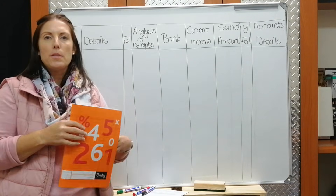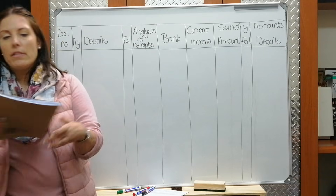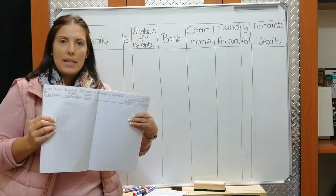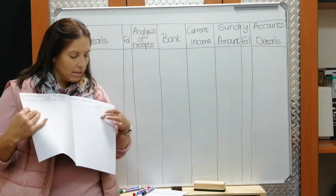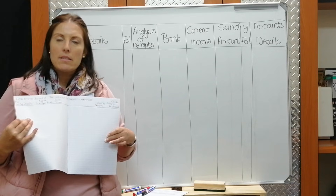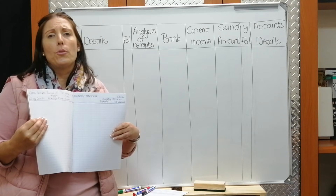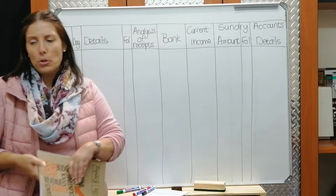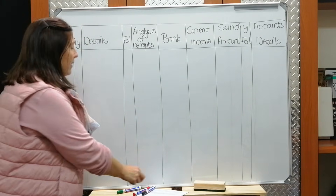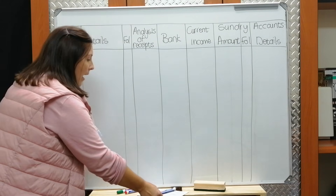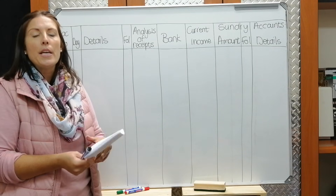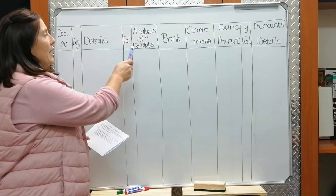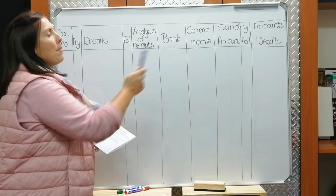This is an eight column cash journal, and the one I've used in my example is the eight column cash receipts journal — once again over a double page. This one has a space for details at the end. As long as you have columns, you can draw them by hand. What we have on the board is the format for the cash receipts journal. This example is for Sparky Electricians, also on the PowerPoint presentation. We must open columns for analysis of receipts, bank, current income, and sundry account.